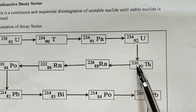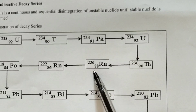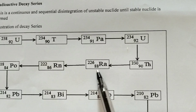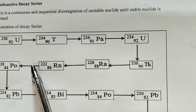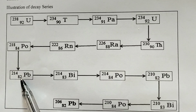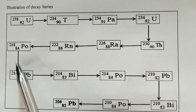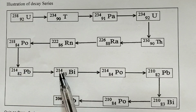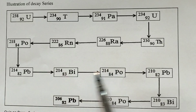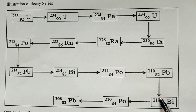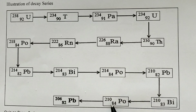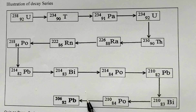The decay chain continues: Ra (226, 88) → Rn (222, 86) by 1 alpha; Rn (222, 86) → Po (218, 84) by 1 alpha; Po (218, 84) → Pb (214, 82) by 1 alpha because the mass number reduces by 4 and atomic number reduces by 2. Then Pb (214, 82) → Bi (214, 83) by 1 beta; Bi (214, 83) → Po (214, 84) by 1 beta; Po (214, 84) → Pb (210, 82) by 1 alpha. Finally it disintegrates from Po (210, 84) to Pb (206, 82) by 1 alpha.